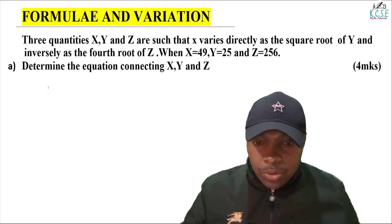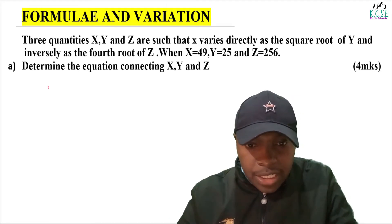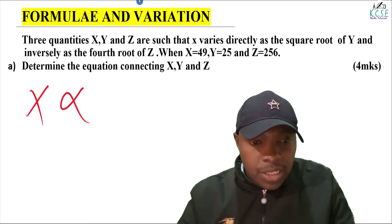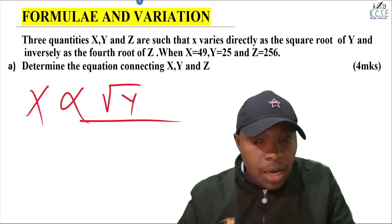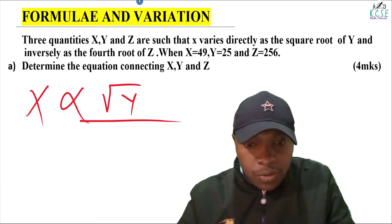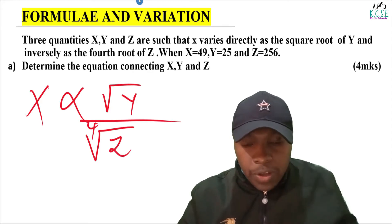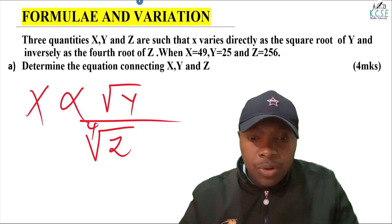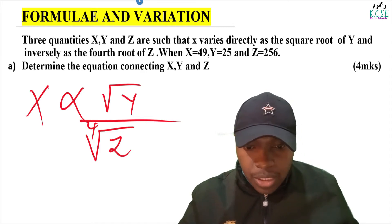The first thing we're going to do is to write these variations. x varies directly as the square root of y and inversely as the fourth root of z. That is how you're supposed to write that.